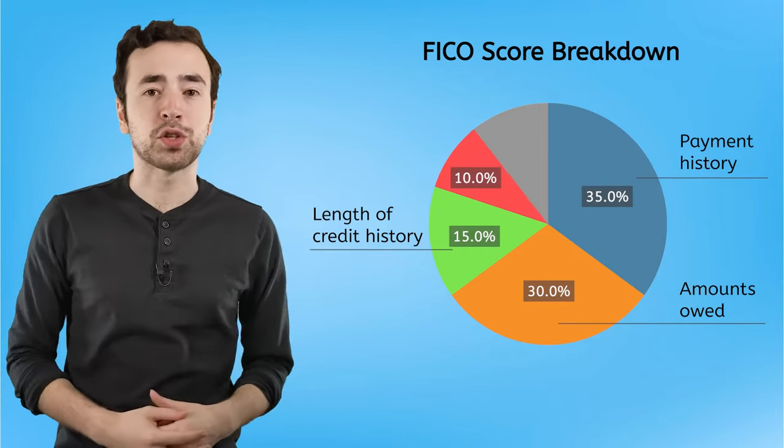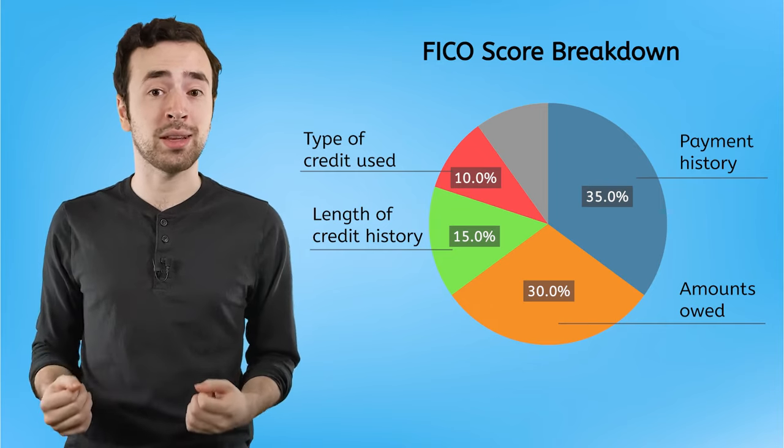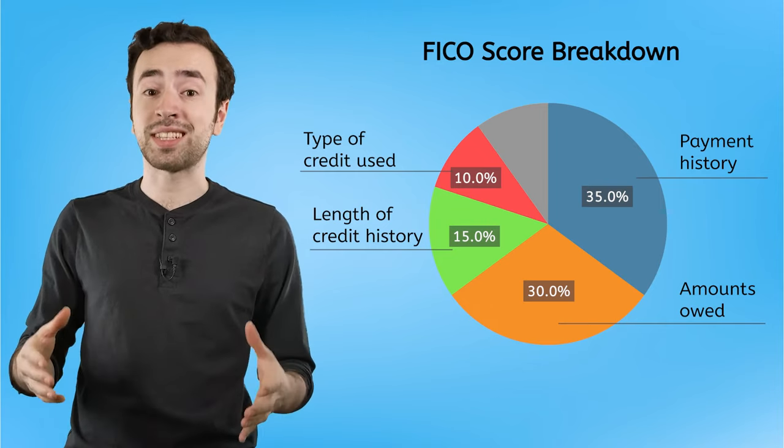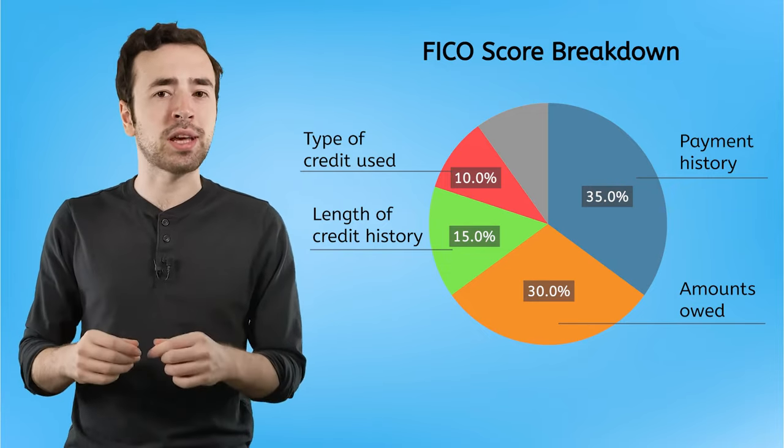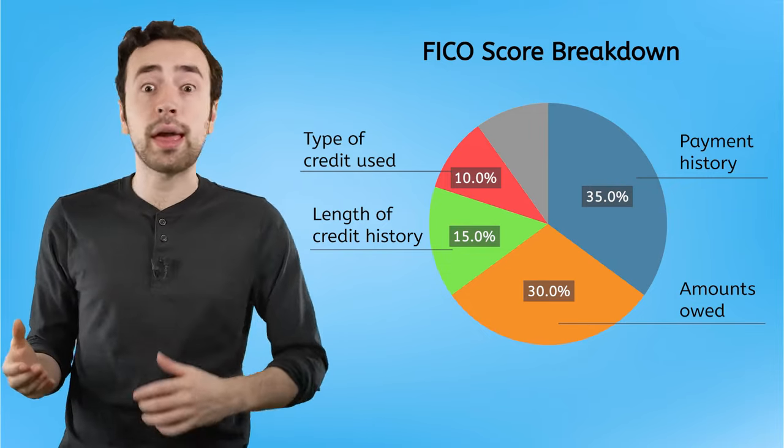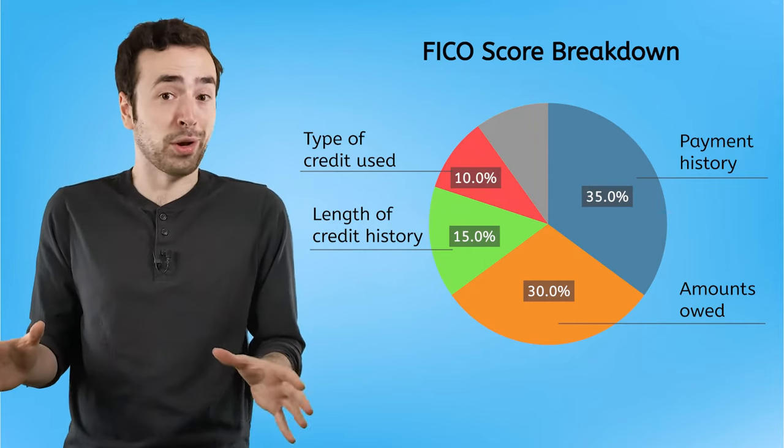About 10% of the score is determined by the variety of credit you've taken on. Lenders want to see that you're able to handle multiple different types of credit. So, for example, having a credit card and a car loan is diverse enough. Remember, we don't want to go overboard here.